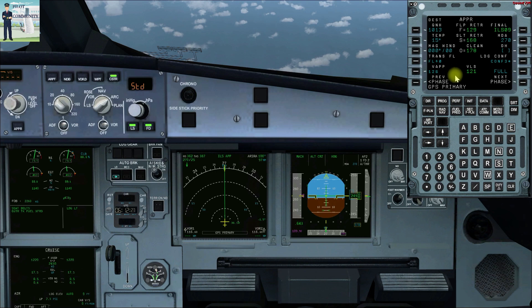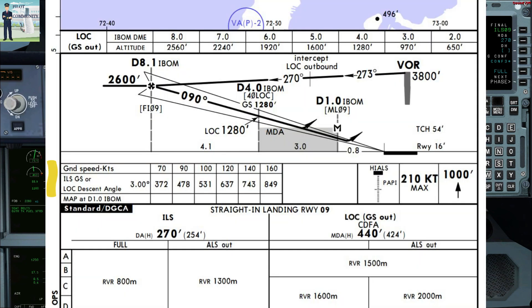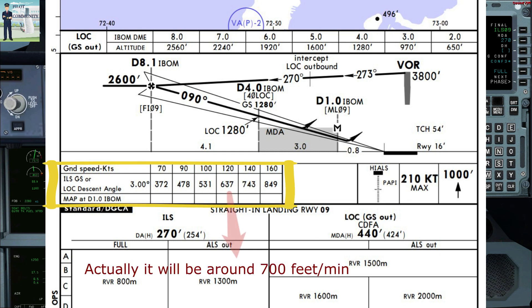Going to the approach phase, our approach speed is 126 knots. As per the 3-degree descent, our rate of descent will be approximately 640 feet per minute.